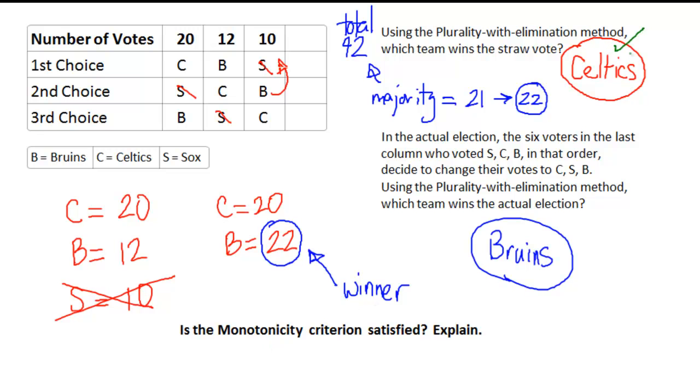and then before a re-election happens, there are some changes that are made, but those changes favor the winning candidate. This last column was eliminated, and it favored the Celtics, now they had more first place votes, then that candidate should win the re-election.